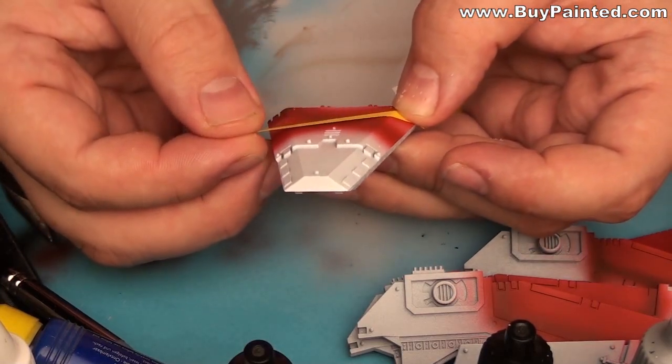I cut the strips of banner tape. I applied them to the doors masking the Death Company crosses. After masking the crosses and red details, I painted the armor black.